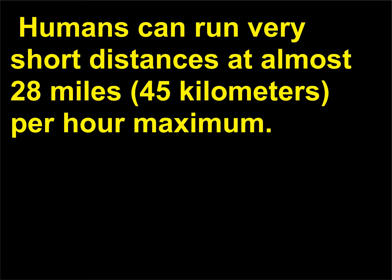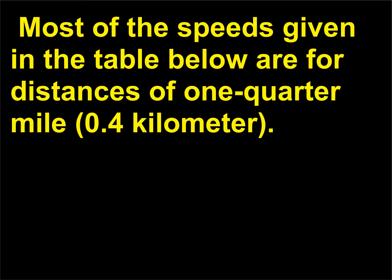Humans can run very short distances at almost 28 miles, 45 kilometers, per hour maximum. Most of the speeds given in the comparison table are for distances of one quarter mile, 0.4 kilometer.